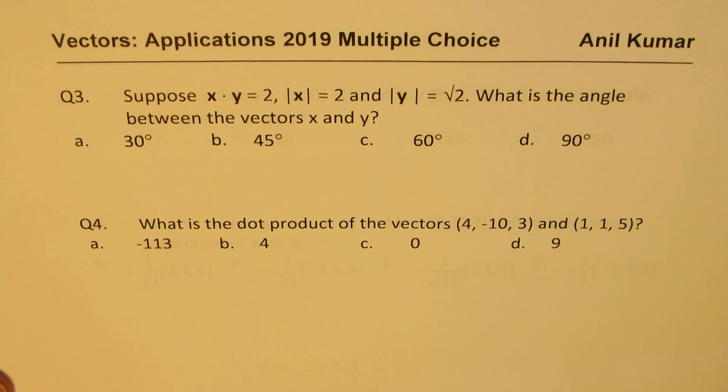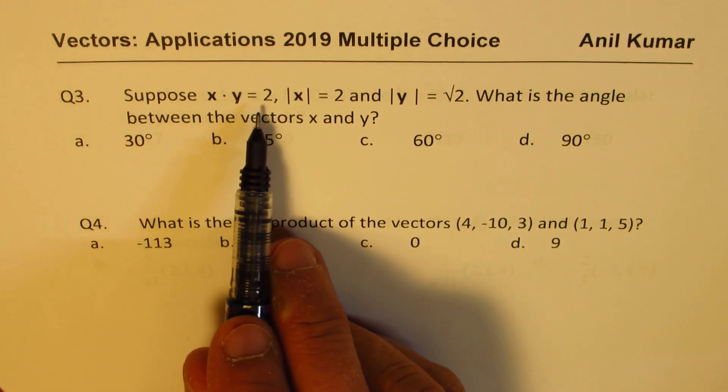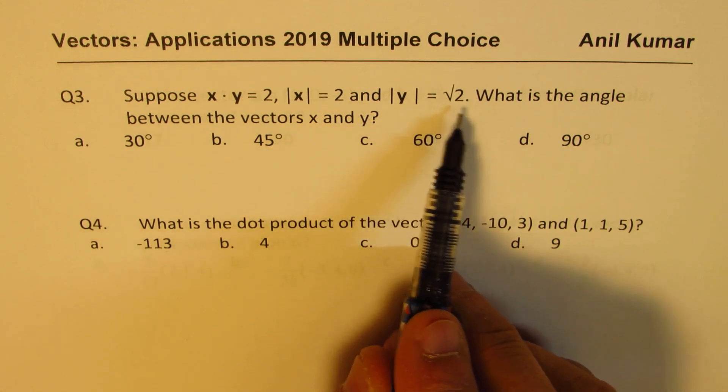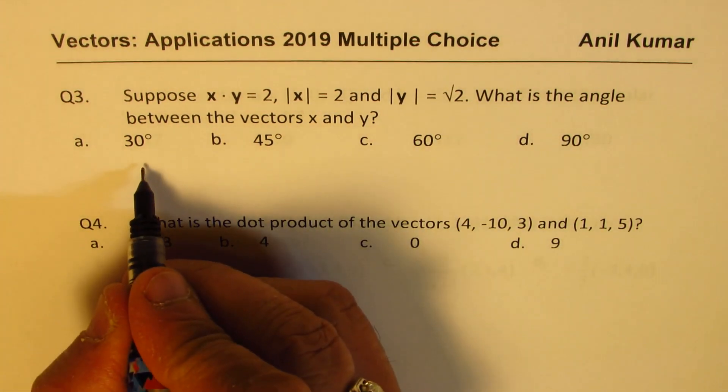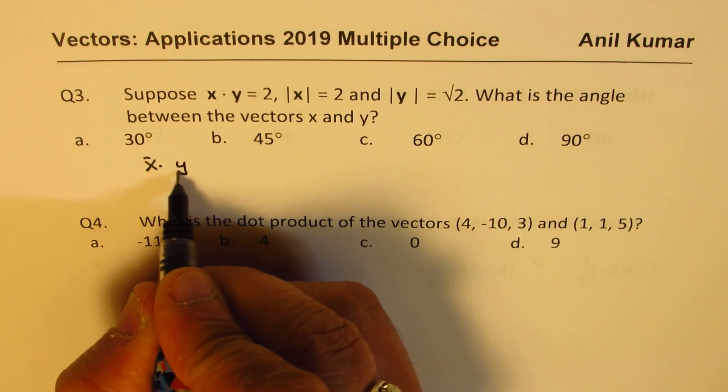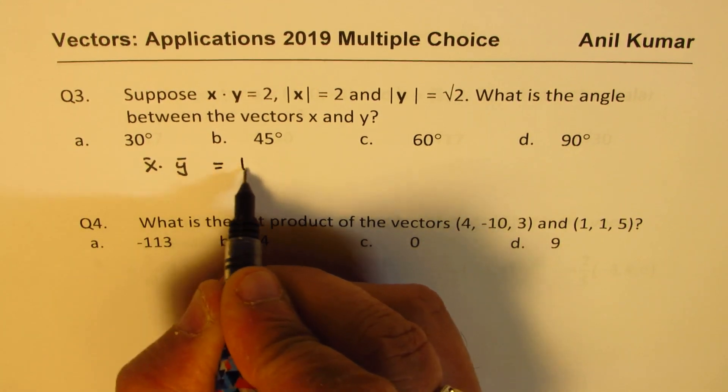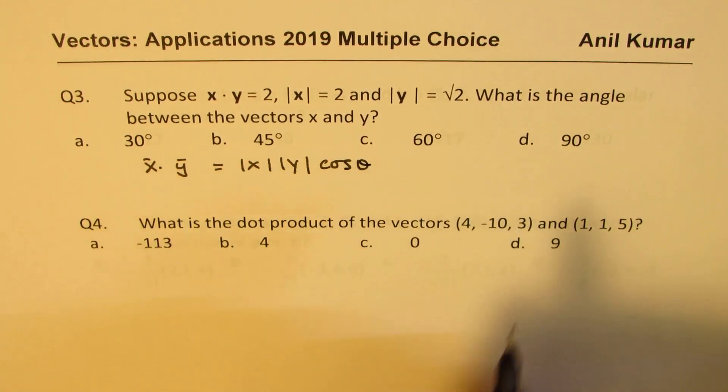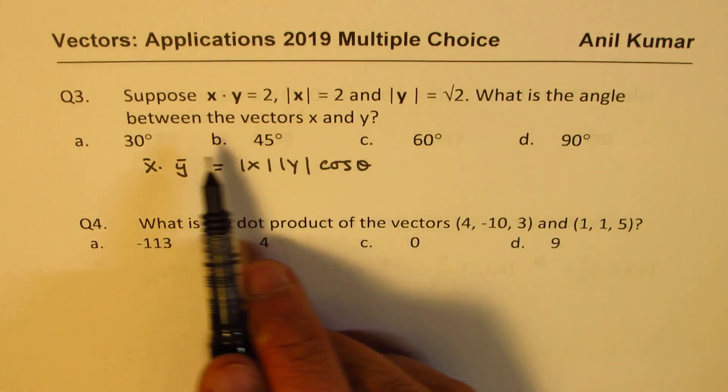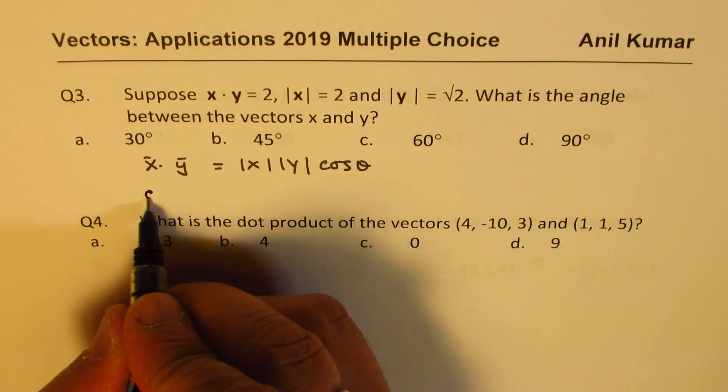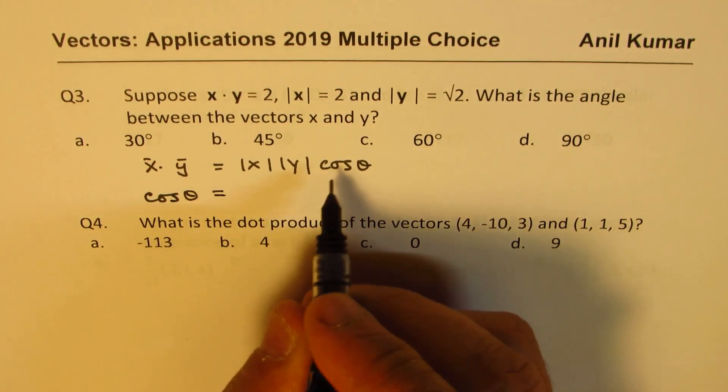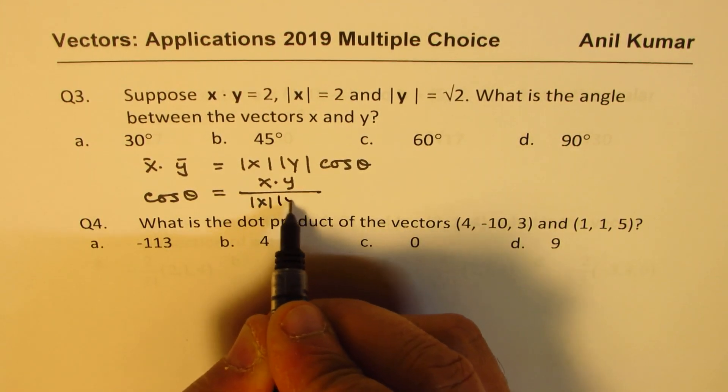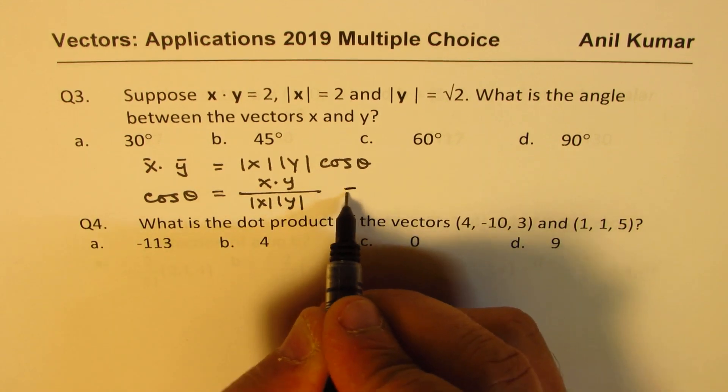Question number 3. Suppose x dot y equals 2, magnitude of x is 2, magnitude of y is square root of 2. What is the angle between the two vectors? So x dot y is basically magnitude of x times magnitude of y times cos theta. Now we are given all this, we need to find the angle between the vectors. So we know cos theta is basically equal to x dot y over magnitudes product.